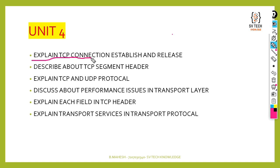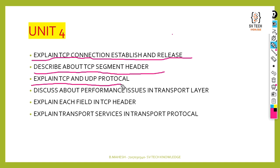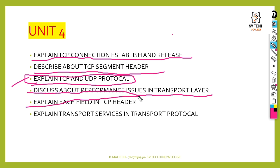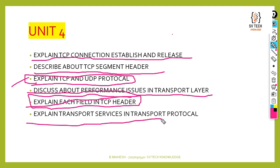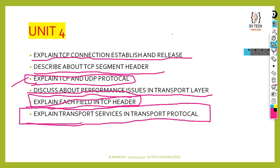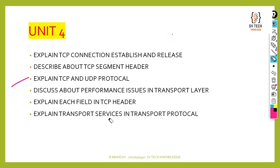Coming to the fourth unit, which is the easiest unit in Computer Networks: explain TCP connection establishment and release. Next: describe the TCP segment header. Next: explain TCP and UDP protocols — this is a very important question. Next: discuss performance issues in the transport layer. Next: explain each field in the TCP header. Finally: explain transport services and transport protocols.